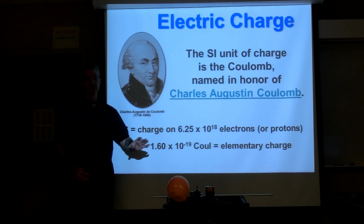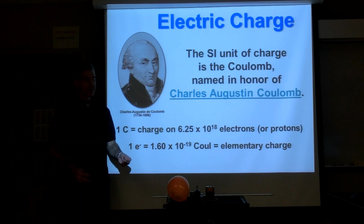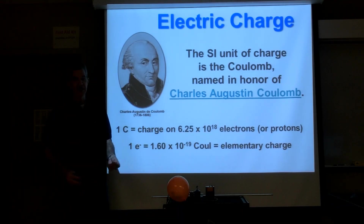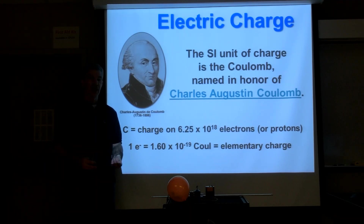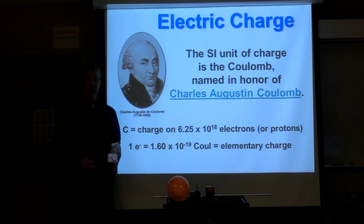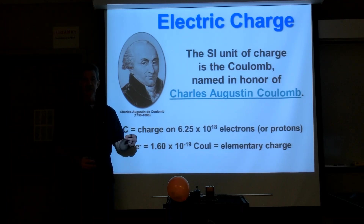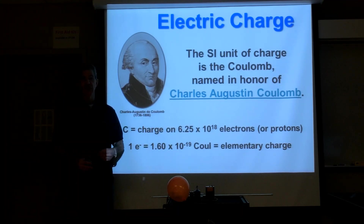Think about Avogadro's number — it's 6.02 times 10 to the 23rd. 10 to the 23rd is 10 to the 5th times 10 to the 18th, and 10 to the 5th is 100,000. So in a small amount of metal, when you have Avogadro's number worth of electrons and maybe 50 or 80 times that many atoms and electrons, one coulomb is a small fraction of what's there — but still an awfully large number.